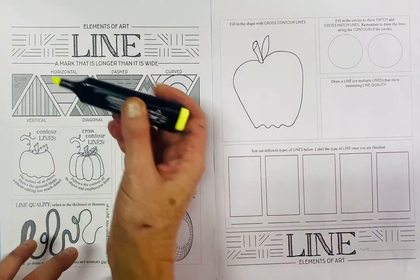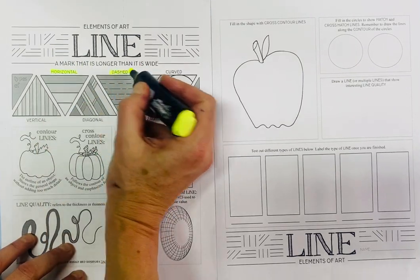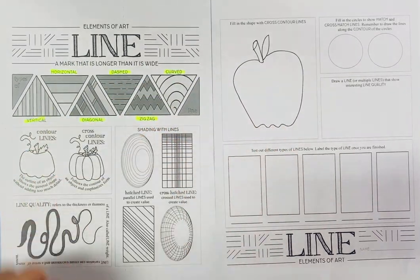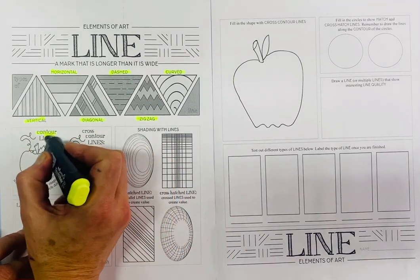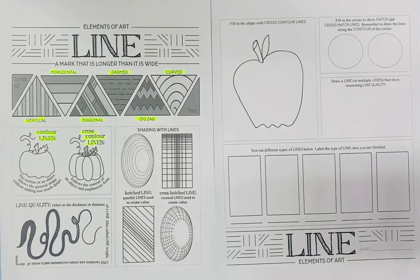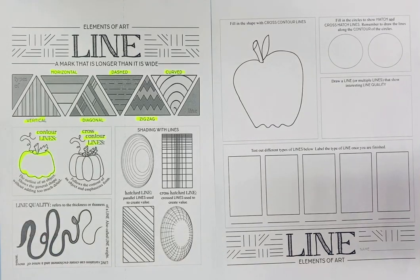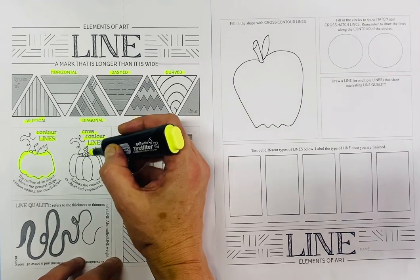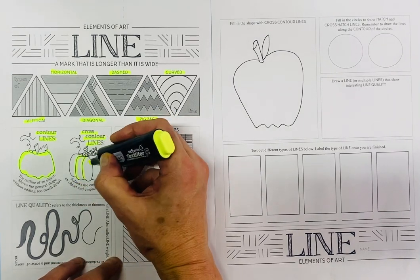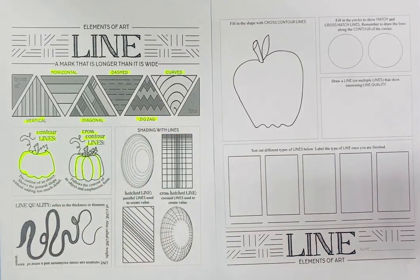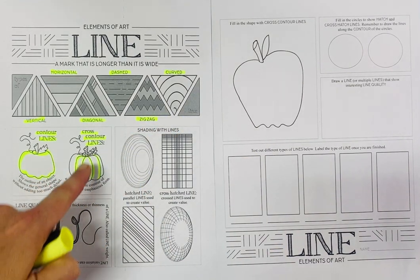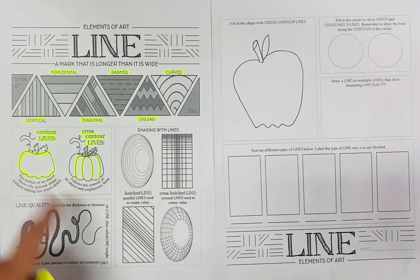We've got those different types of line: horizontal, dashed, curved, zigzag, diagonal, and vertical. Then we've got contour lines and cross contour lines. Contour line is simply the outline of an object, and that is what you are going to be starting with for your design booklet. Remember, you had to choose an object, so think very carefully about it and about the outline. Cross contour lines are lines that follow the contour of the object — notice how this pumpkin becomes 3D immediately with cross contour lines, but looks flat without them.